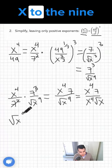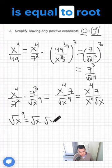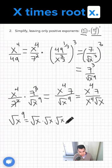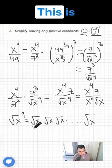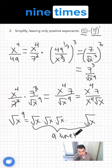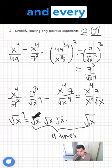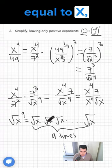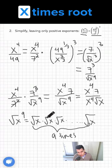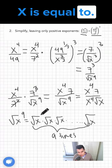Because x to the 9 is equal to root x times root x, 9 times, right? This is 9 times applying it together. And every pair, that's equal to x because root x times root x is equal to x.